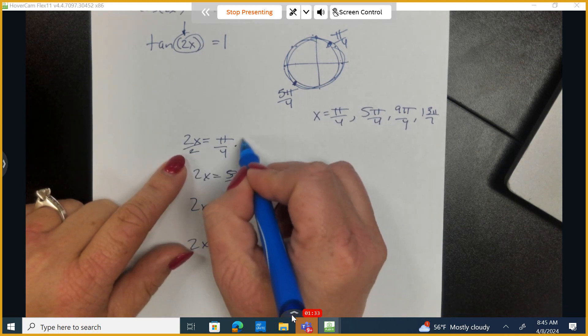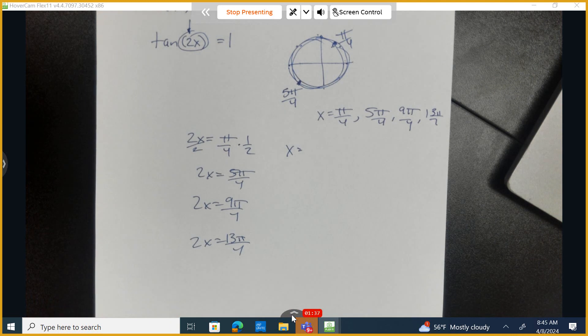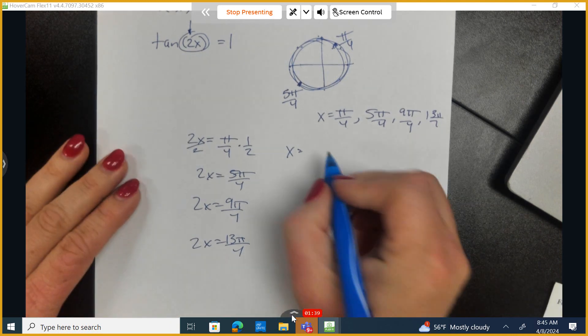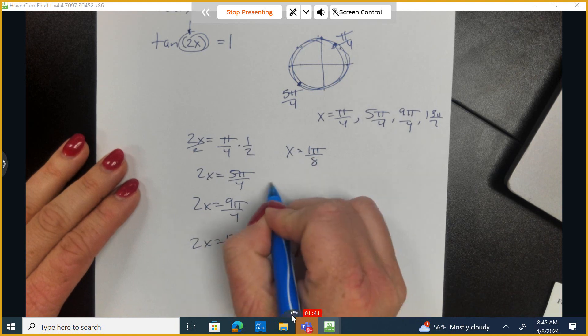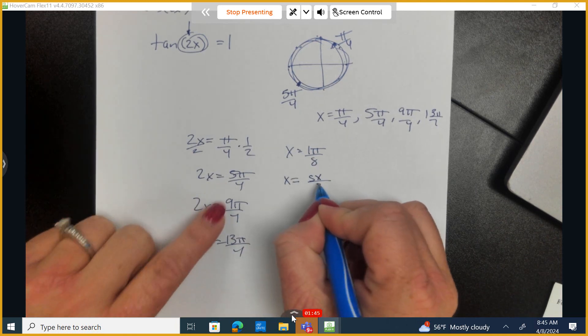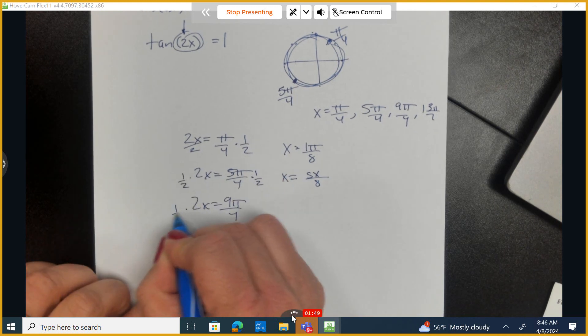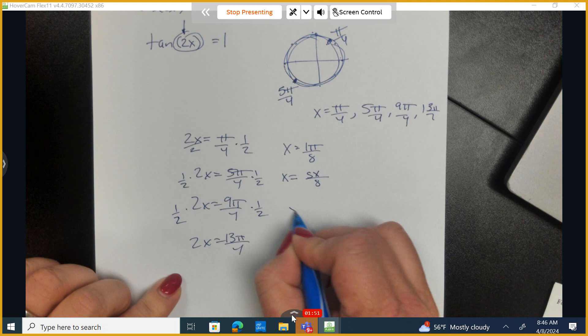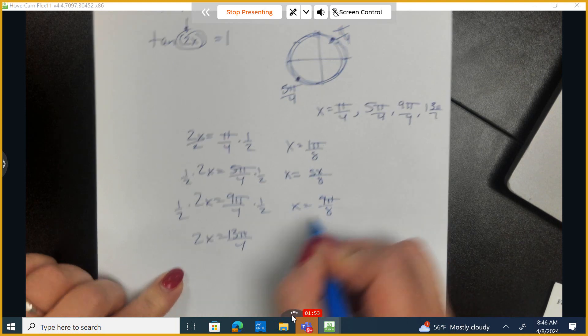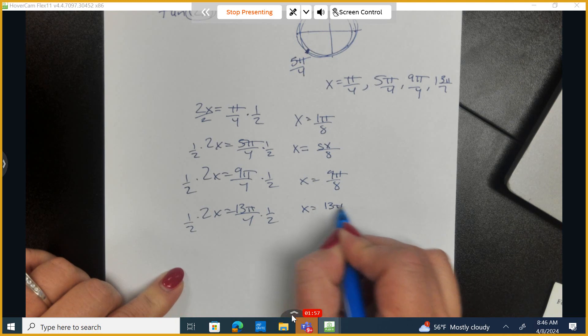So dividing by 2 is the same as multiplying by 1 half. That means one answer here should be pi over 8. Another should be 5 pi over 8 because I'm multiplying by 1 half. The third answer should be 9 pi over 8, and the final answer should be 13 pi over 8.